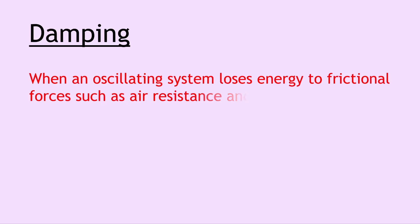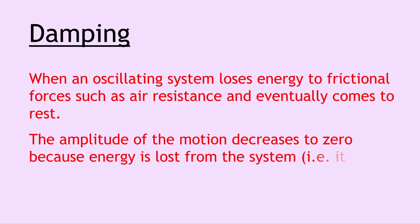Lastly, related to simple harmonic motion is the concept of damping, and this is when an oscillating system loses energy to frictional forces such as air resistance and eventually comes to rest. We say that the amplitude of the motion decreases to zero because energy is lost from the system, i.e. it changes to other forms. An example of damping in everyday life would be a car suspension system — if a car goes over a speed bump, the oscillations will continue until the car suspension system damps those oscillations.